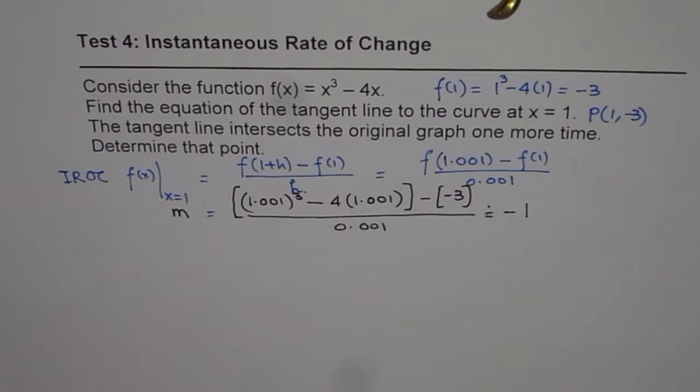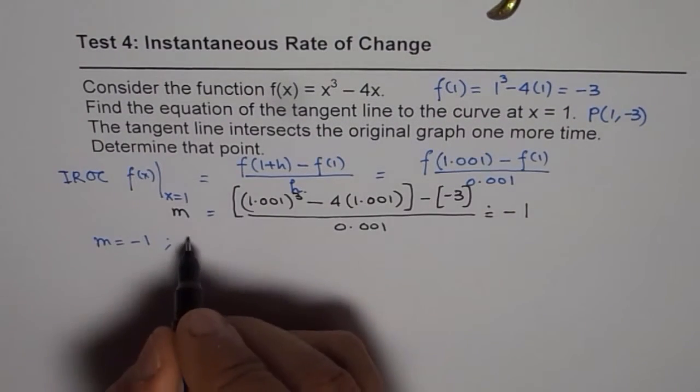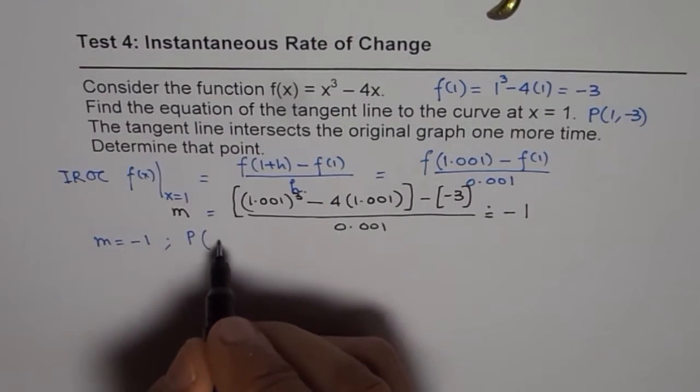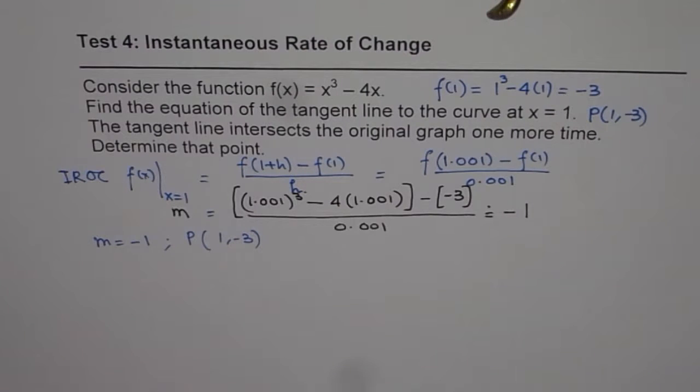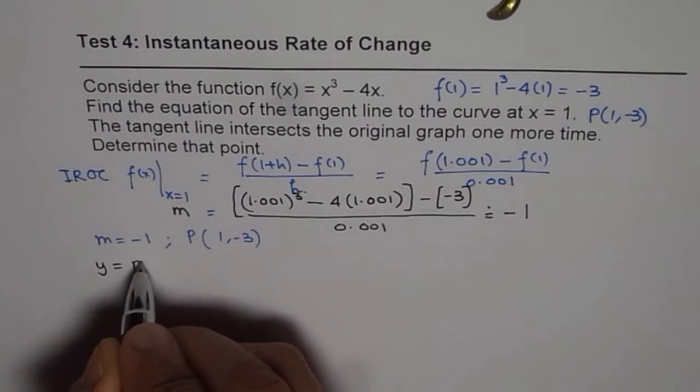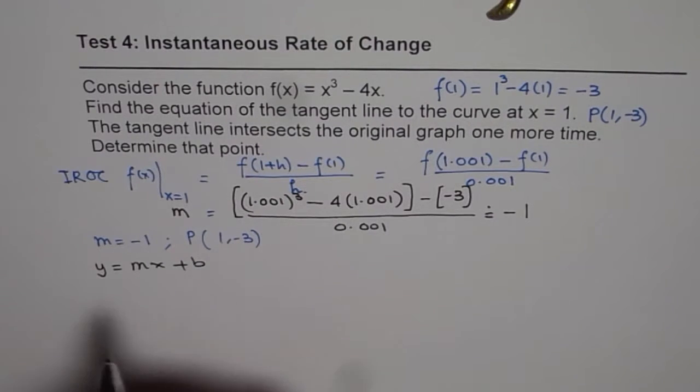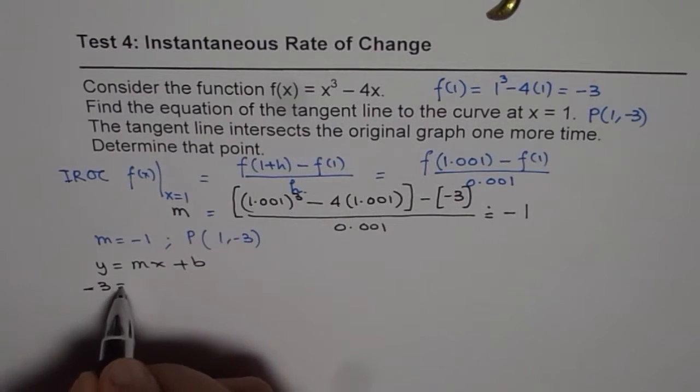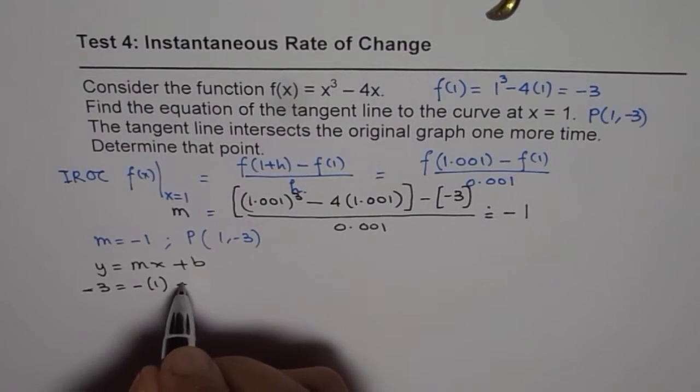Now, we know the slope as m equals minus 1. And we know that the point of tangency is (1, -3). So, we'll try to find the equation of the line. So, equation of the tangent line, which has a slope of minus 1 and it passes through the point (1, -3) should be. Let's write y equals mx plus b. When the slope is minus 1, x is 1, y is minus 3. So, minus 3 equals slope of minus 1, x is 1, plus b.